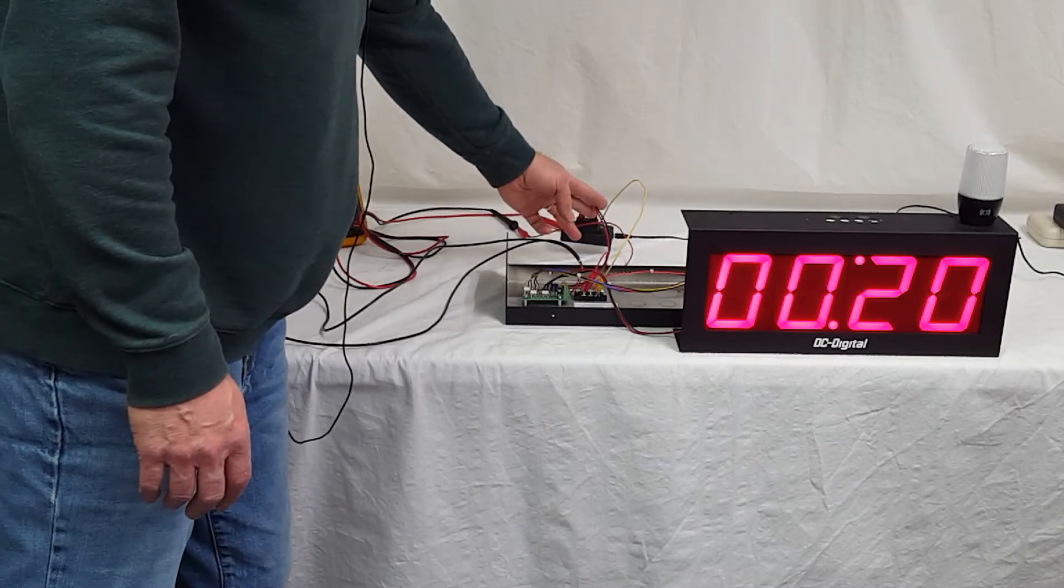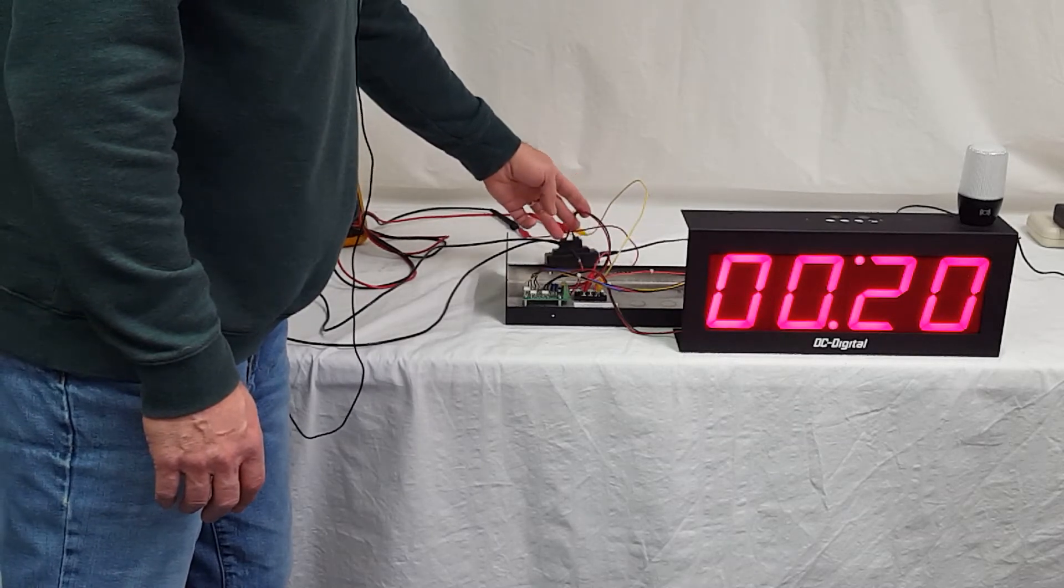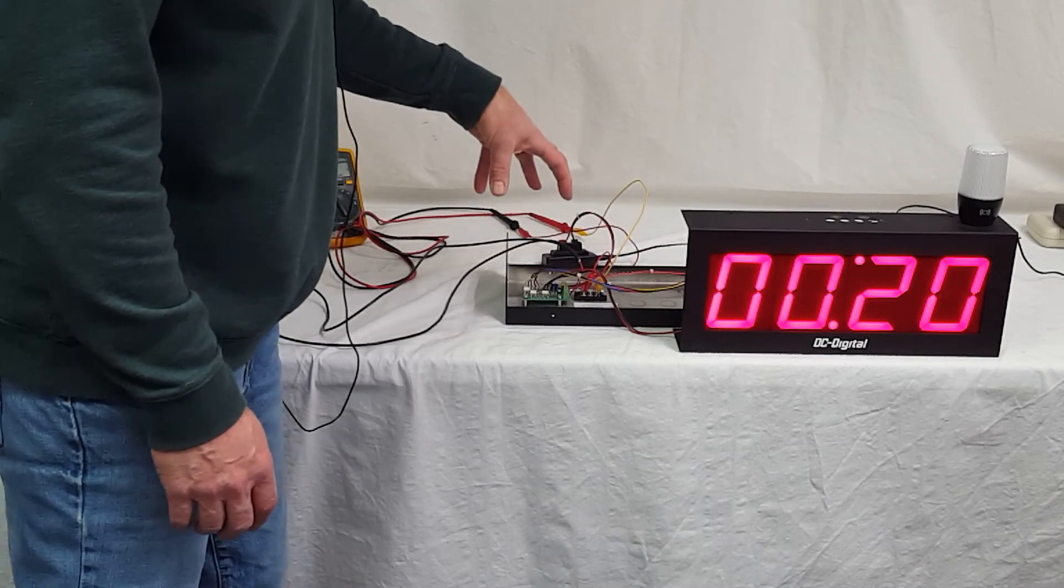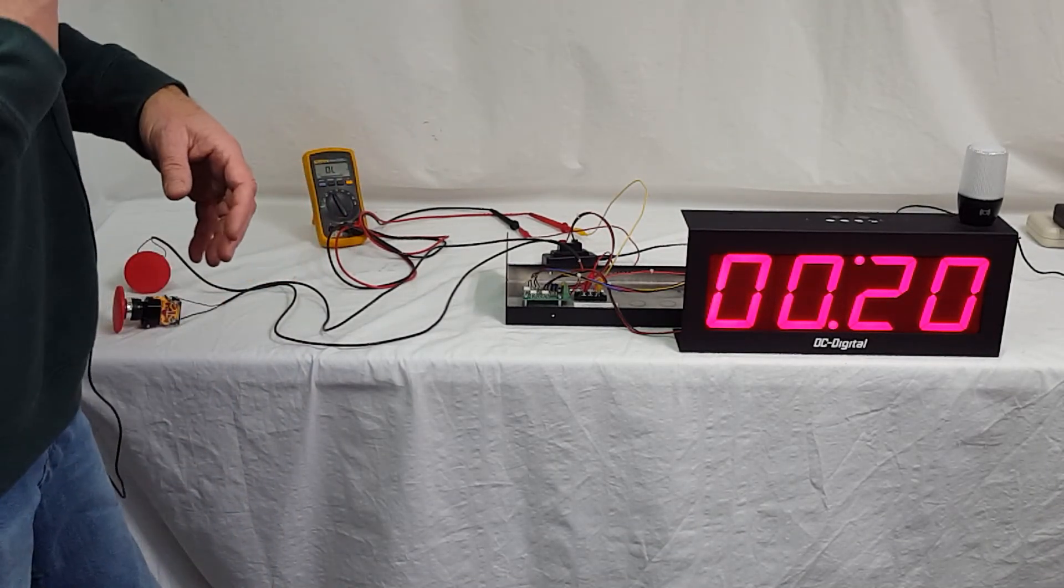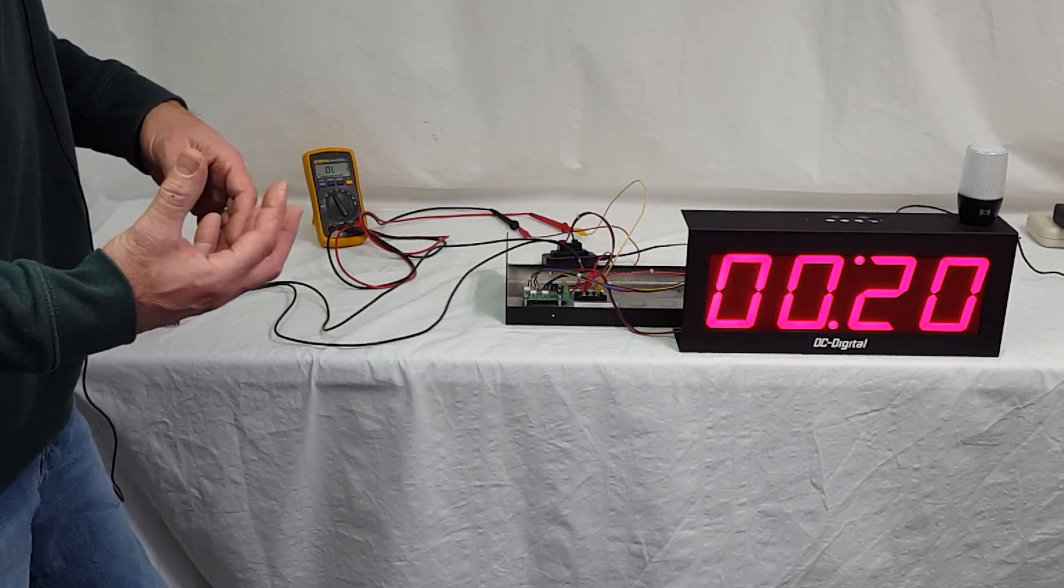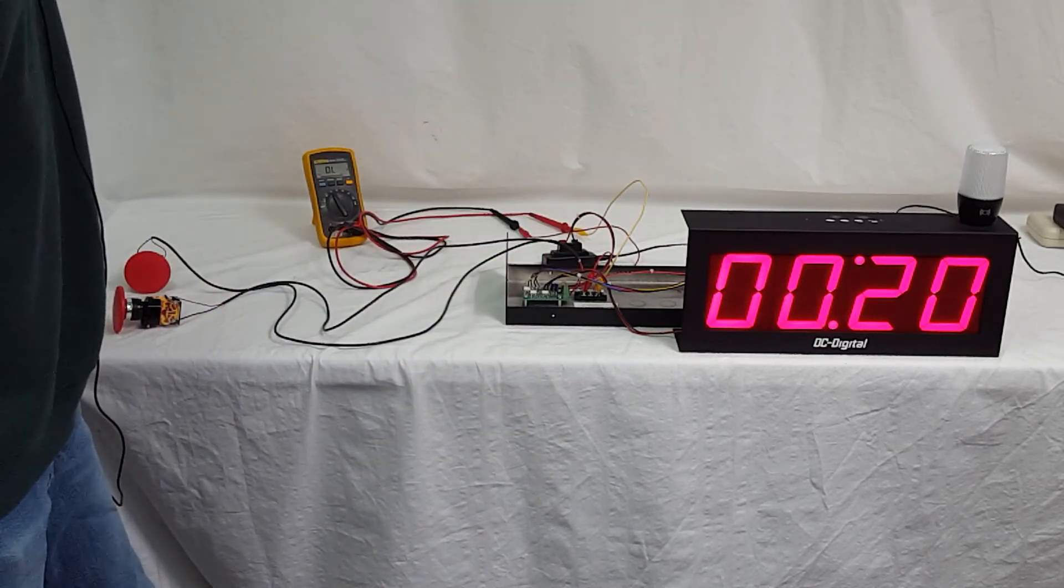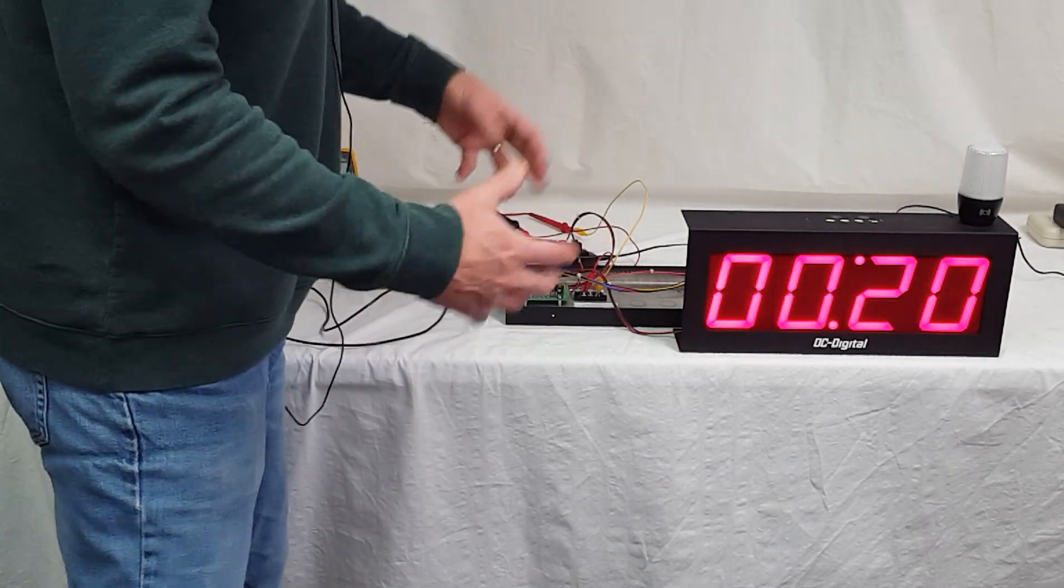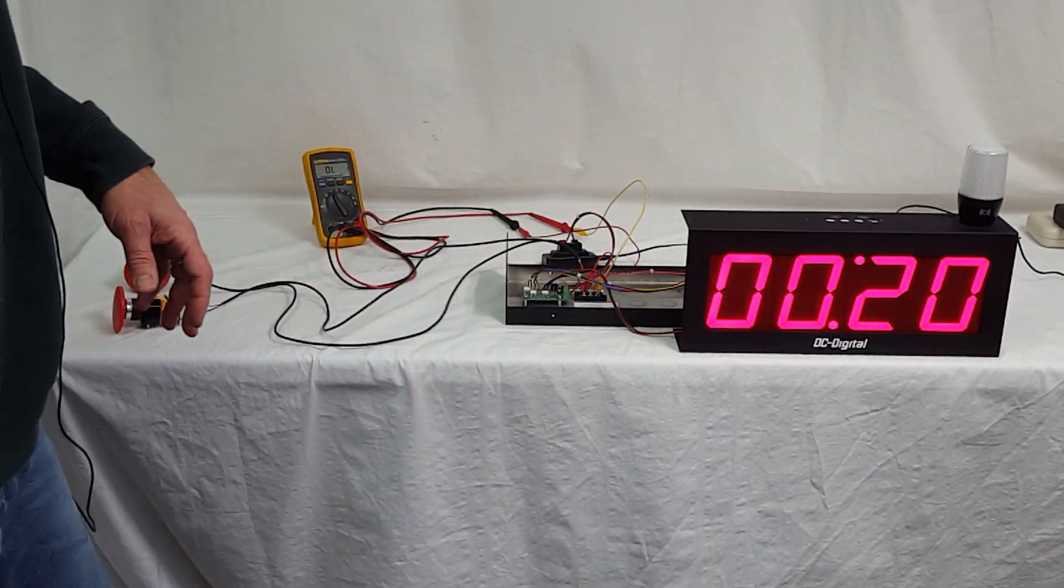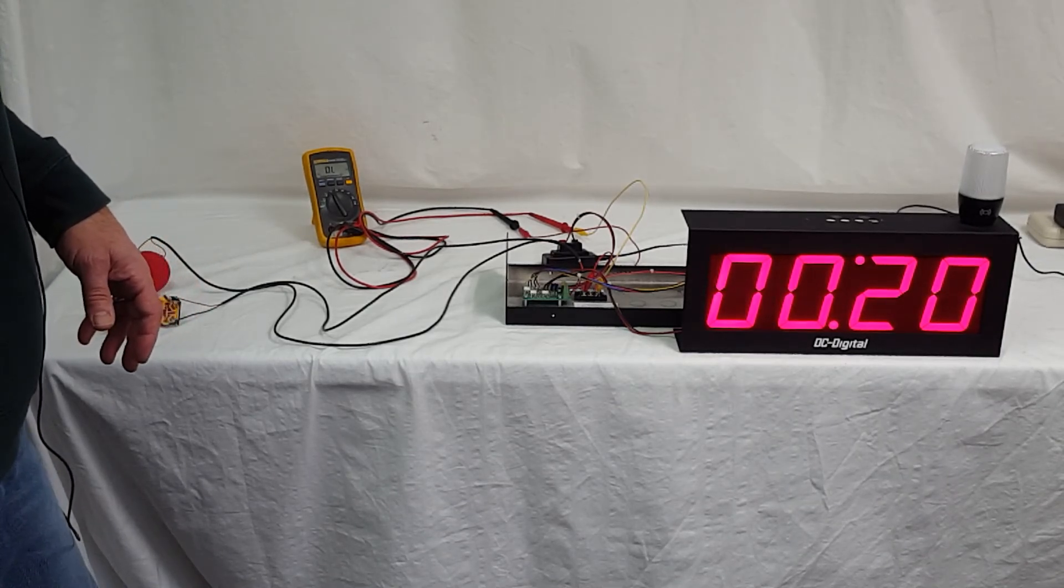The customer also wanted power—they wanted to connect their own power. In all of our timers, you can connect your own 24 volts if you like. We supply a 12-volt DC power supply, which is a 120-volt wall adapter. But the customer wanted to input it themselves and use their 24-volt system.